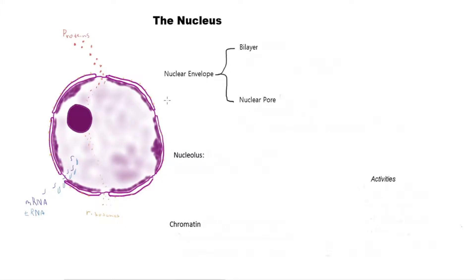The nucleus has various subcomponents. Remember the four things we want to know about each: function, contents/composition, activities performed, and any unique properties. Let's start with the nuclear envelope — the double membrane covering the nucleus and separating it from the cytoplasm. It has two components: the bilayer and the nuclear pores. The bilayer is a phospholipid bilayer, and there are two of them. Whenever you think of a membrane, always think of phospholipids — and remember, phospholipids are lipids.